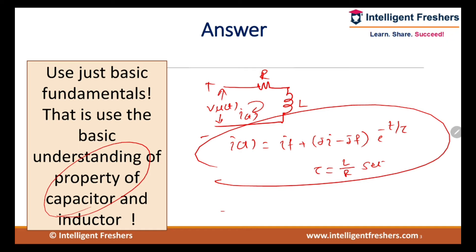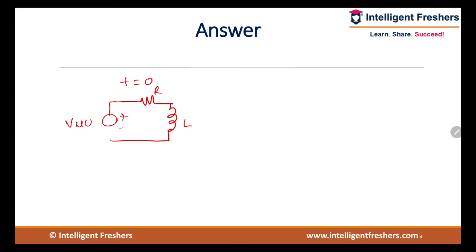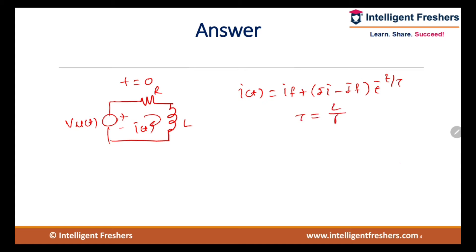The switch is closed at t = 0, so we know that for an RL series circuit the applied voltage is V·u(t), which is a step input of magnitude V. I(t) is given by: final current plus (initial current minus final current) into e raised to minus t by tau, where tau equals L by R seconds.